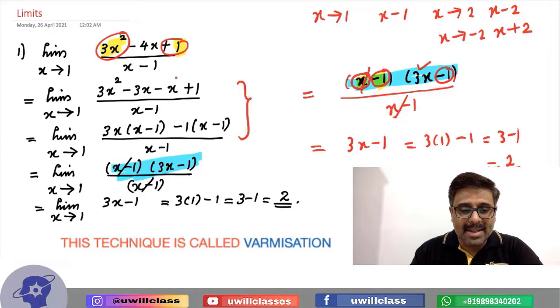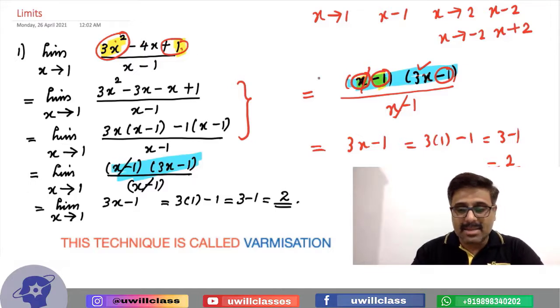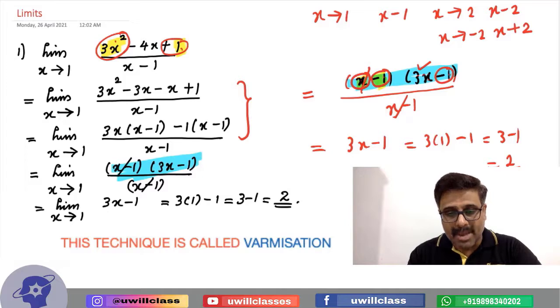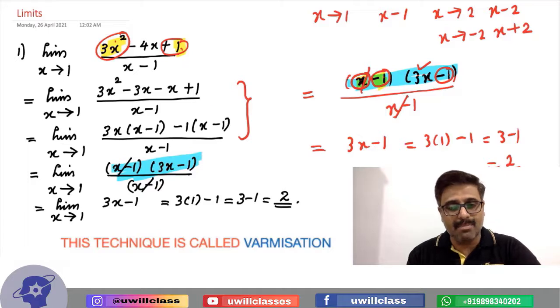So once again, x tends to 1, so one of the factors is x minus 1. How will you get the second factor? First term divided by first term, that is 3x. Last term divided by last term, that is minus 1. And then, denominator also, if you have a similar factorization, you can do the same procedure. I hope this trick will help you.